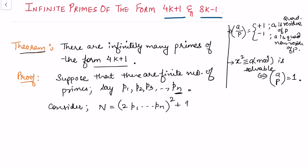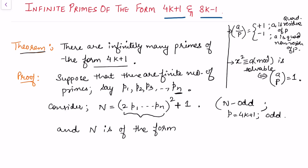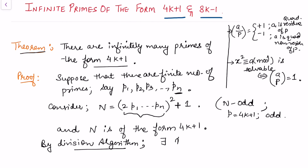We can see that N is odd, because 2·p₁·...·pₙ is an even quantity and squaring it gives an even number; adding 1 makes N odd. We can also see from this that N is of the form 4k+1. By the division algorithm, there exists an odd prime p such that p divides N.